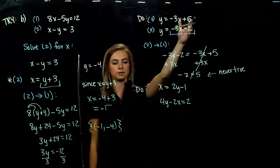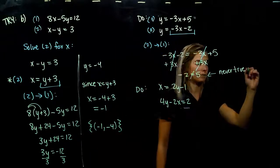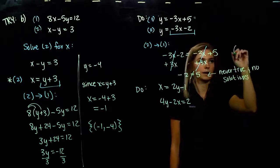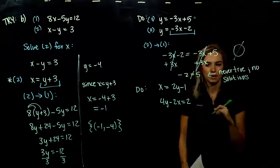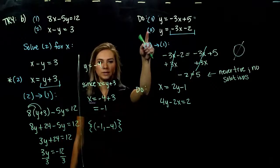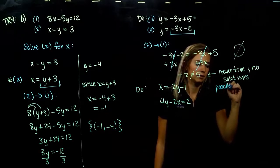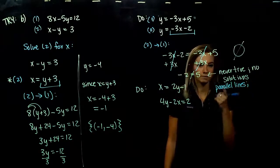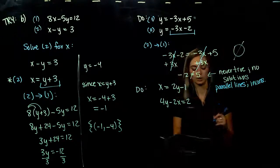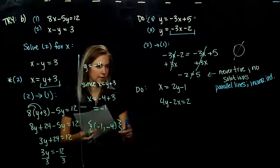We know negative 2 will never equal 5 — that's a statement that's never true. So how many solutions do we have? It doesn't matter what we plug in; we're never going to make that happen. No solutions. The set notation for that is the empty set. Since we're dealing with parallel lines, we don't have a solution, so the system is inconsistent. And since the two lines are not the same, they are independent — inconsistent, independent.